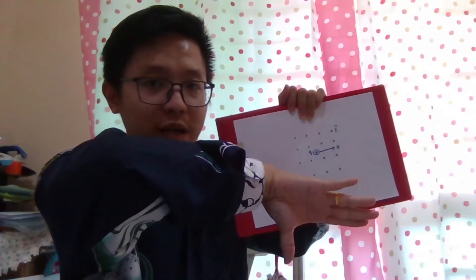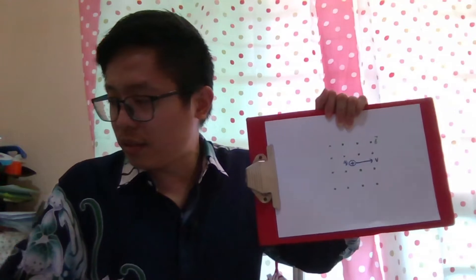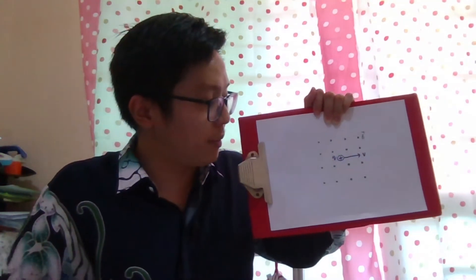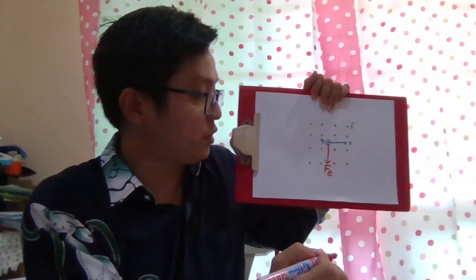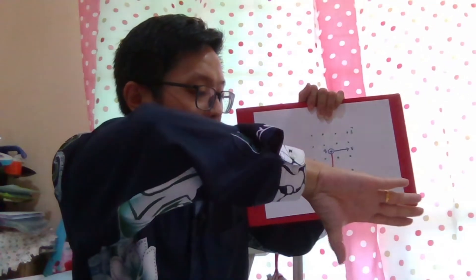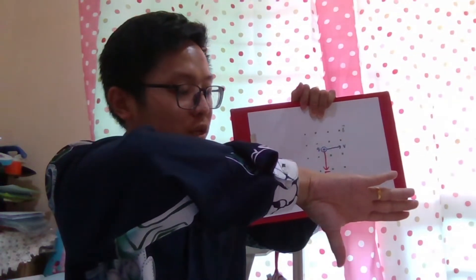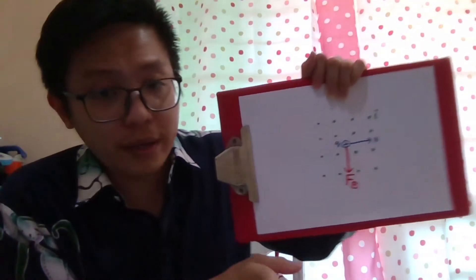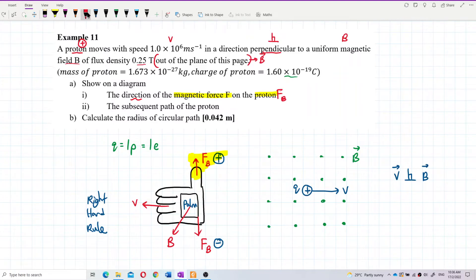The thumb is pointing downward, and for a positive charge, the magnetic force follows the thumb. So the magnetic force is also downward. Let me draw it out — force is downward, following the thumb, because this is a proton — a positive charge.